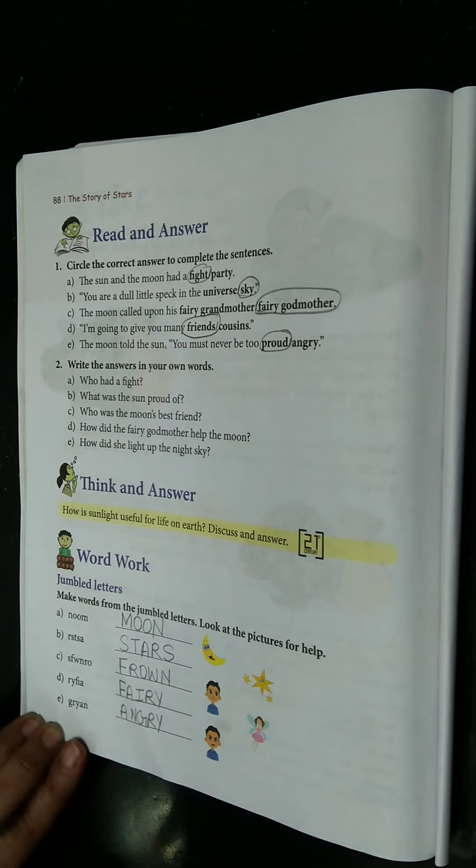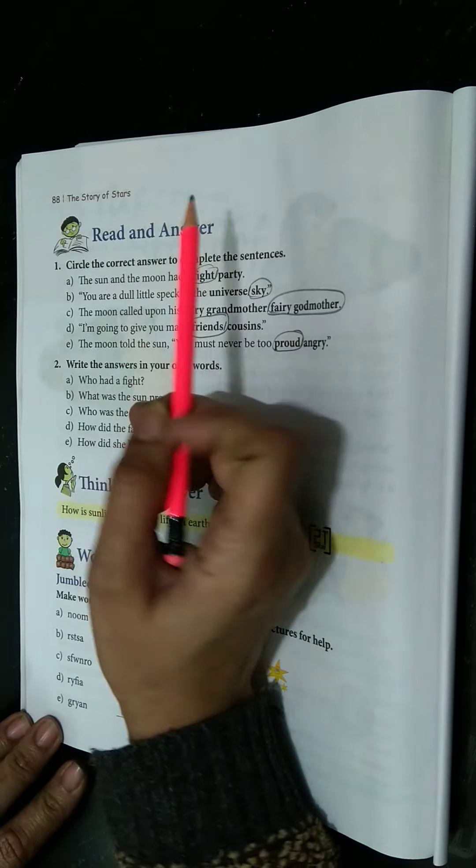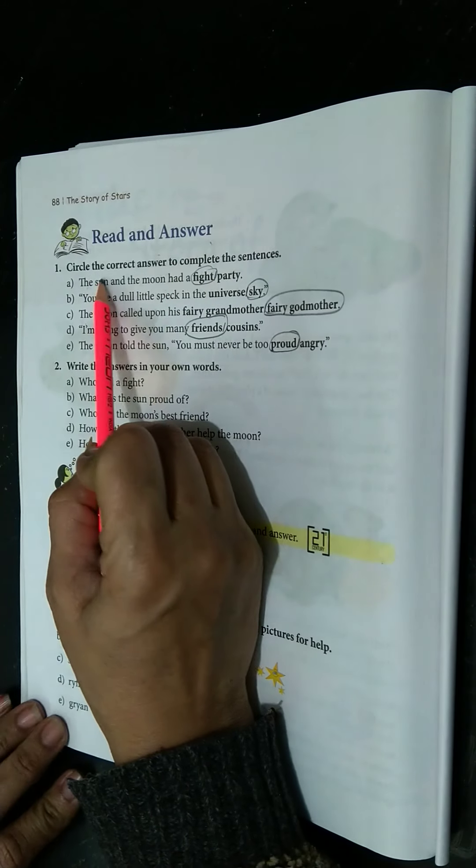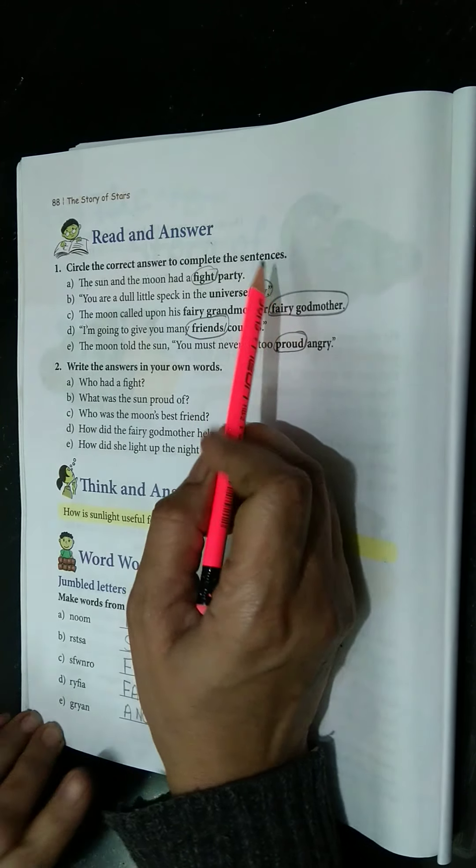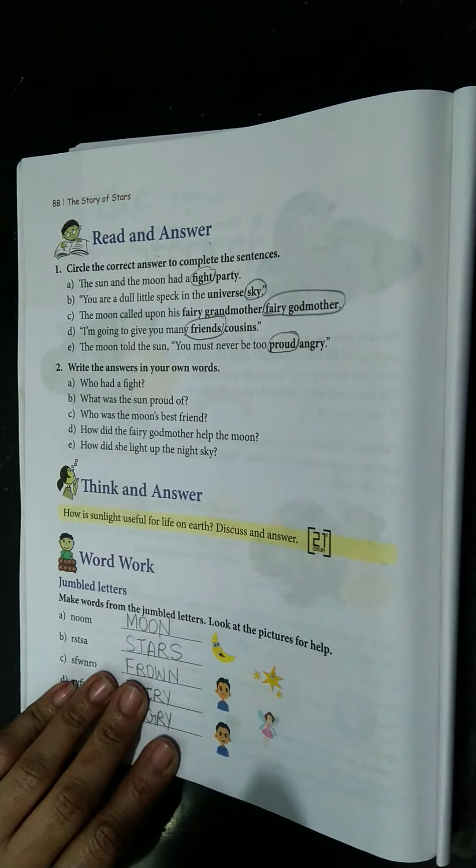Lesson number 9, The Story of Stars. Read and answer. Circle the correct answer to complete the sentences. You have to circle the correct answer.